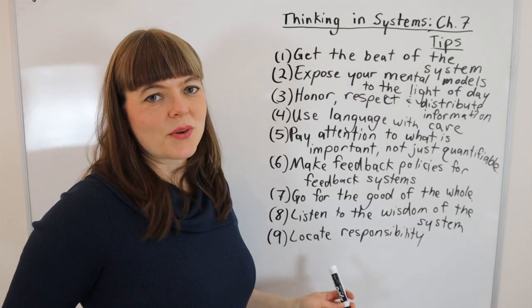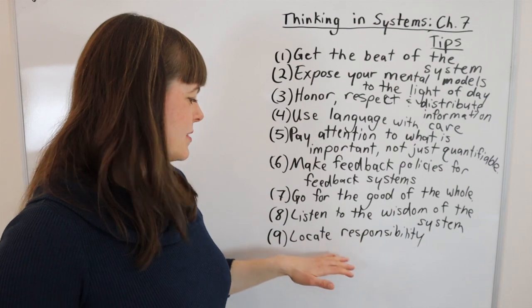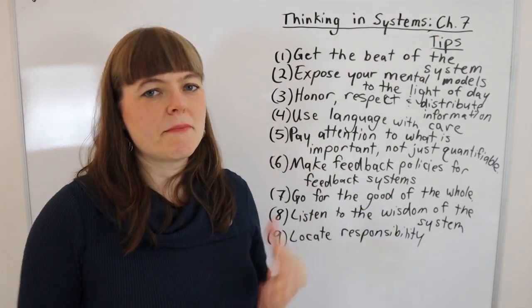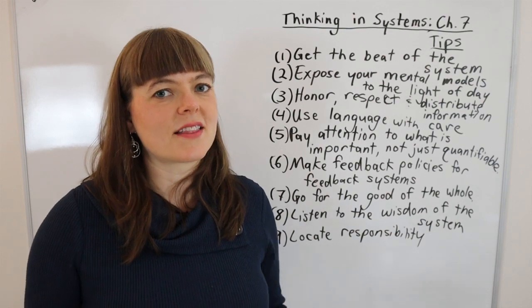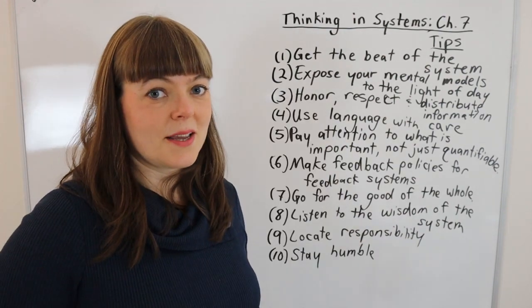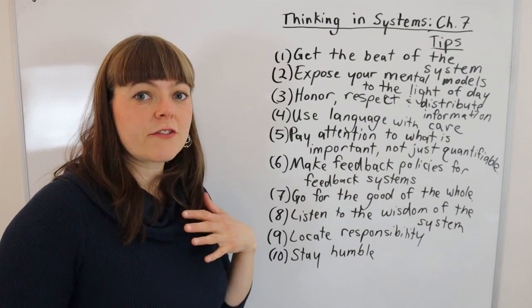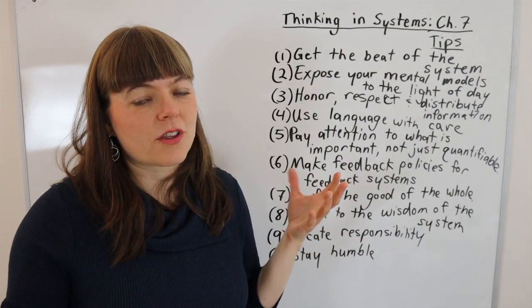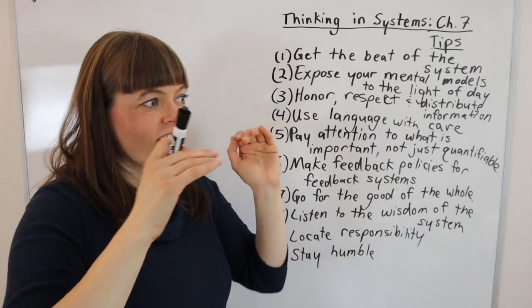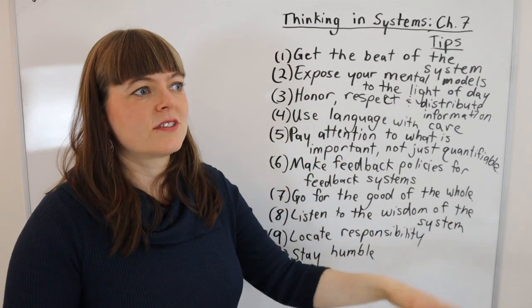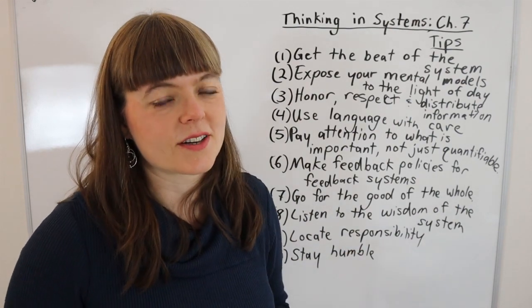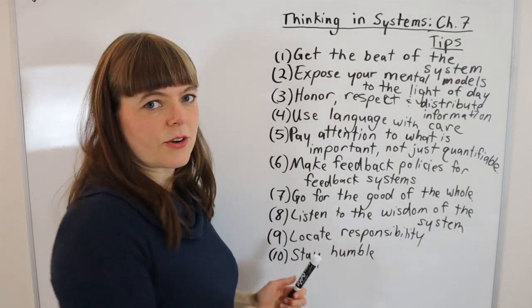Her next tip is to locate responsibility and this is basically where she says align people's incentives, make sure people in the system have skin in the game. Her next tip is to stay humble and to learn from trial and error. Try something knowing that it may not work the way it works in your head, see how it works afterwards, be humble enough to admit you were wrong or something happened that you didn't expect. I would actually call this one trial and error.